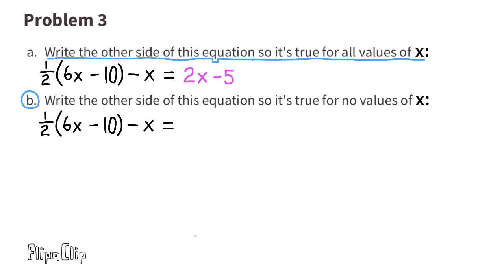B: Write the other side of the equation so it's true for no values of X. All I have to do is make a small change: I can change 2X minus 5 to 2X plus 5, and it would be true for no values of X.